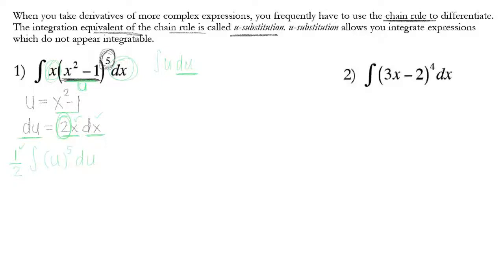Now we're ready to integrate. We bring the 1/2 down and get u to the 6th over 6 plus c. Then we go back and change out our u to the original, since we didn't start with u and don't finish with u. We multiply the 2 and the 6: so we have (1/12)(x² − 1)⁶ plus c.